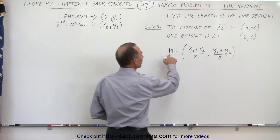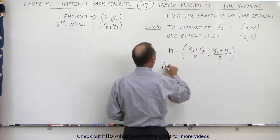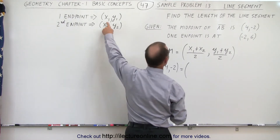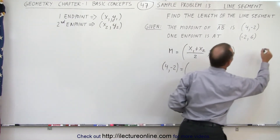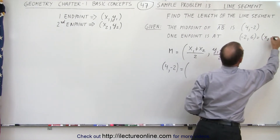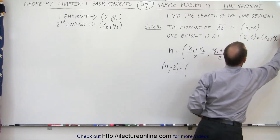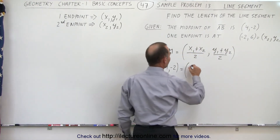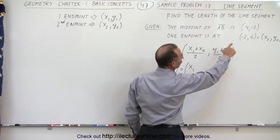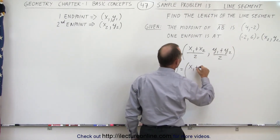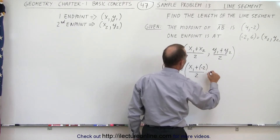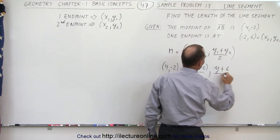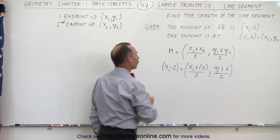We can then plug in what the midpoint is. We were given that, so we can say that (4, -2) is equal to the midpoint expression. Let's say the known endpoint (-2, 6) corresponds to x2 and y2. So we have (x1 + (-2)) divided by 2, and (y1 + 6) divided by 2, and that should equal (4, -2).